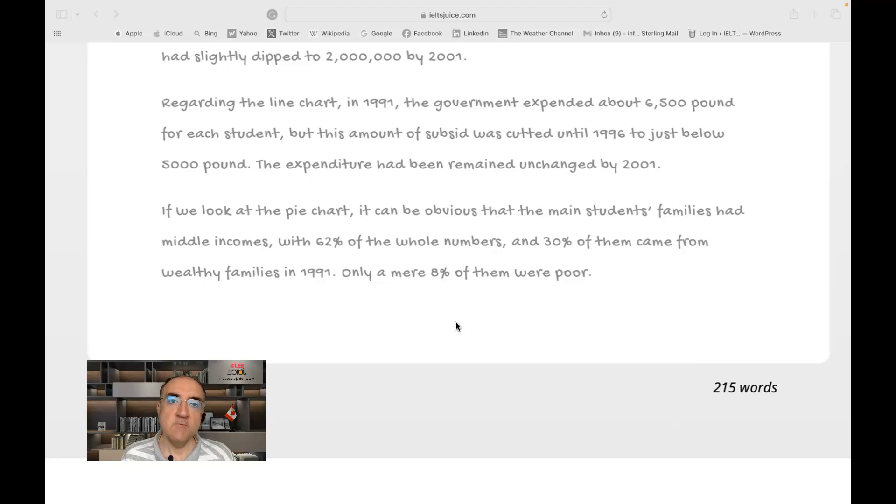If we look at the pie chart, it can be obvious. It can be obvious? Like, is it obvious or not? I'm joking here, but I mean, some people can see it and some people cannot. Either it is obvious or not. So, it is obvious that the main students' families, I love the punctuation here, you see, the apostrophe comes after S. Because students here is plural. Students' families had middle incomes with 62% of the whole numbers and 30% of them came from wealthy families in 1991. Only a mere 8% of them were poor.